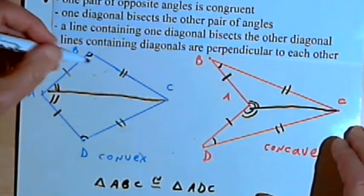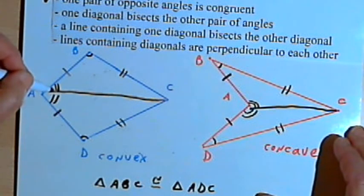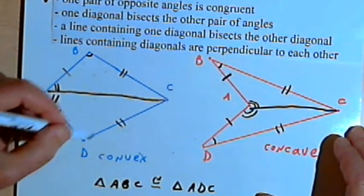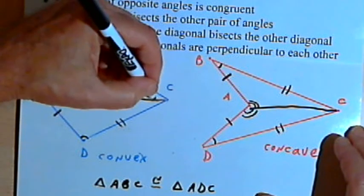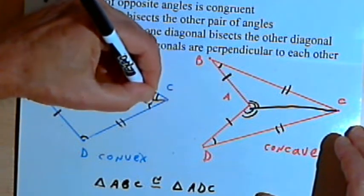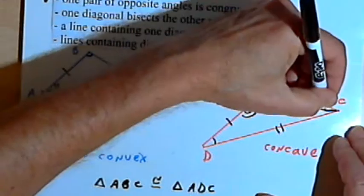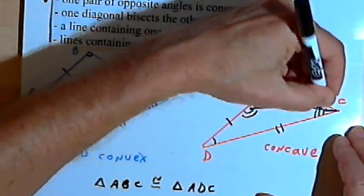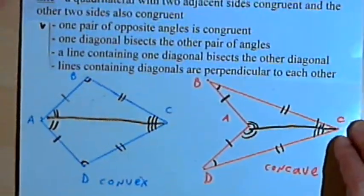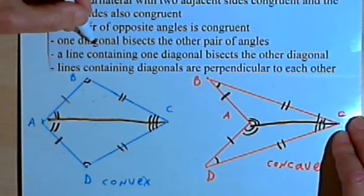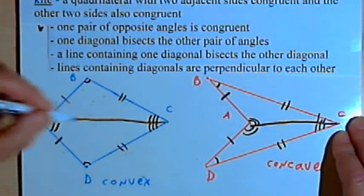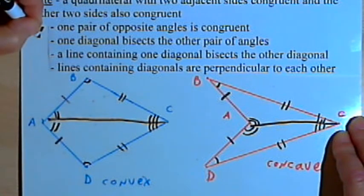And angle BCA corresponds to angle DCA, so they're congruent, which means we've bisected angle D. So in both cases, we have one diagonal bisecting that other pair of angles, angle A and angle C.